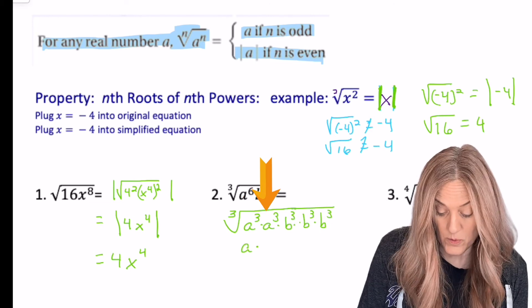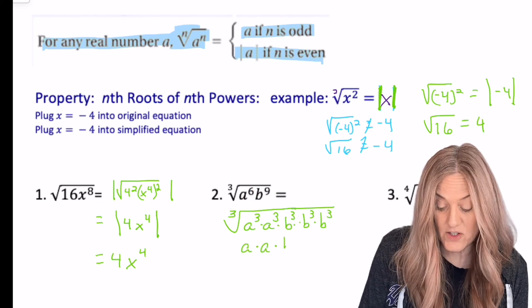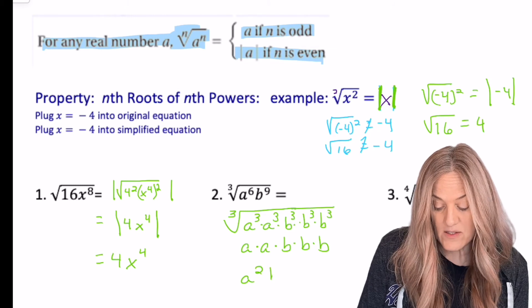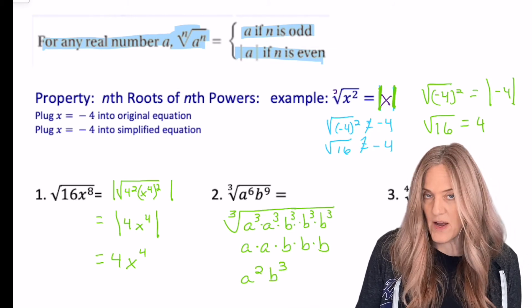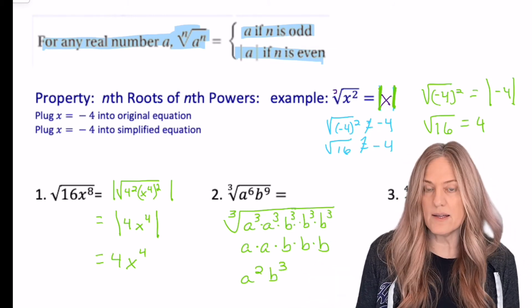Now if I take the cube root of a cubed, I have a times cube root of a cubed, a, and so on. For a final answer of a squared b cubed, do I need the absolute value? No, because it was an odd index.